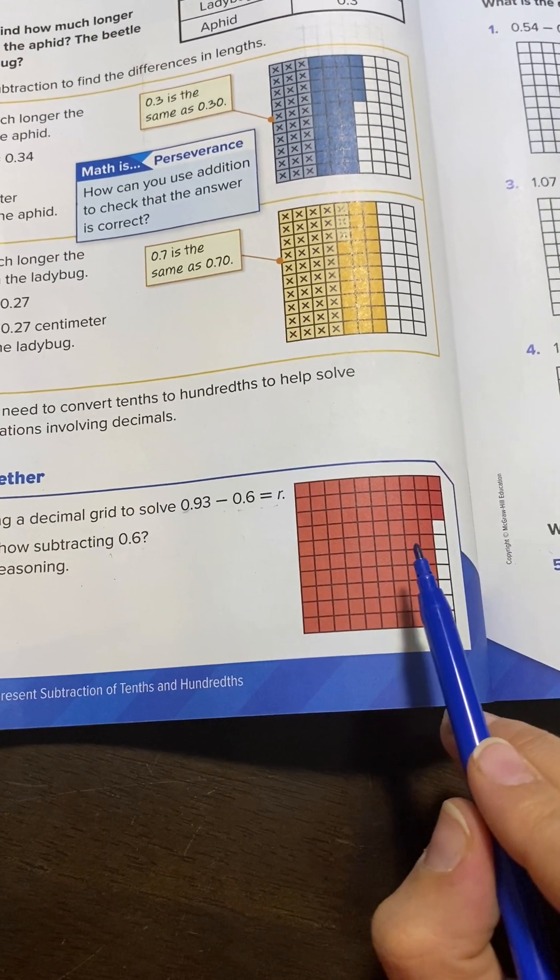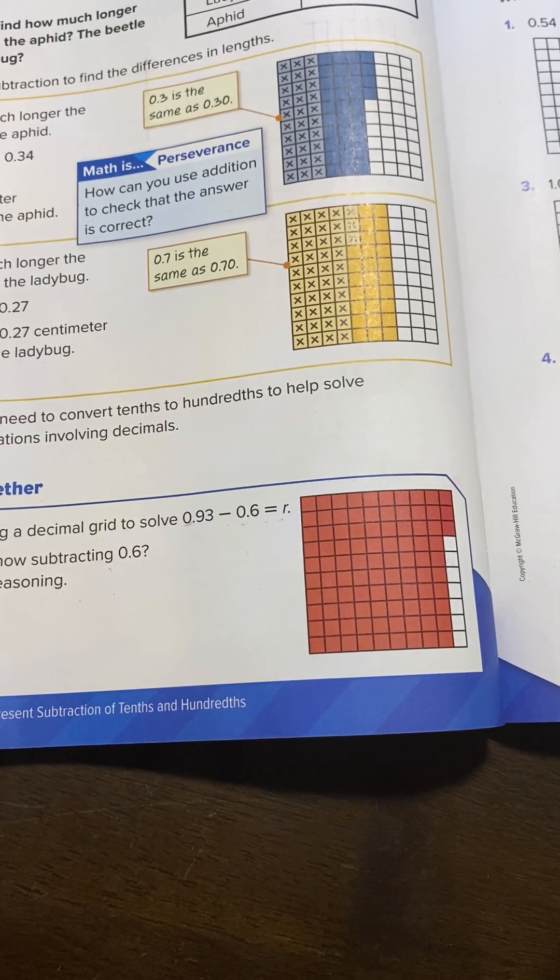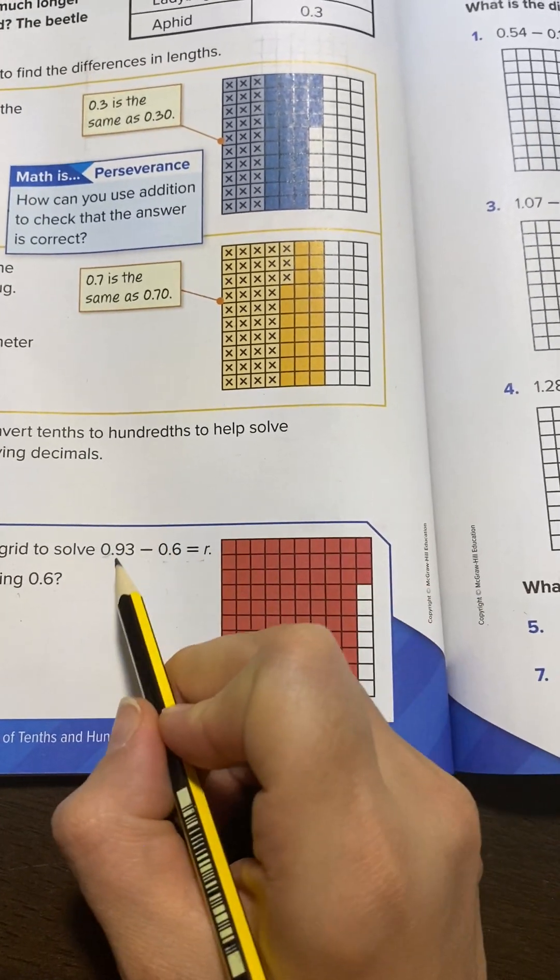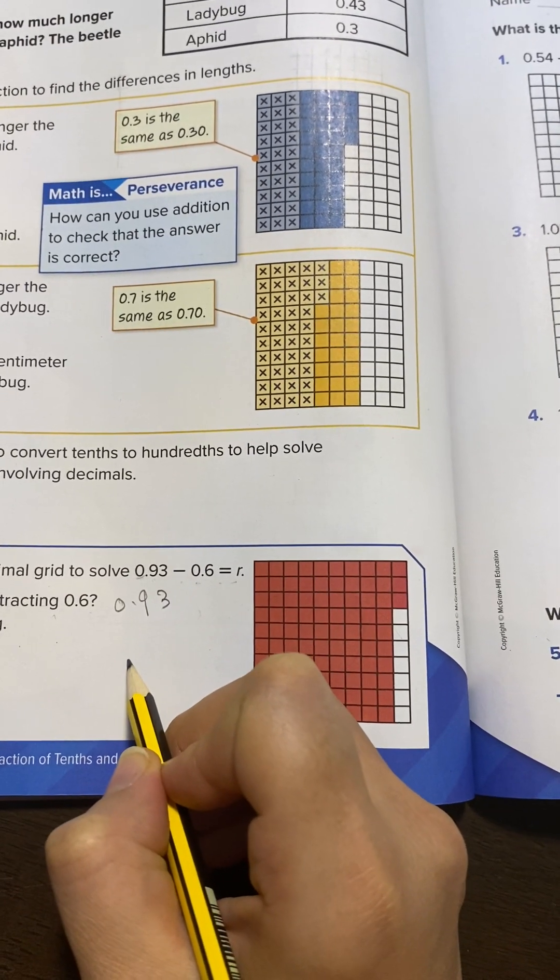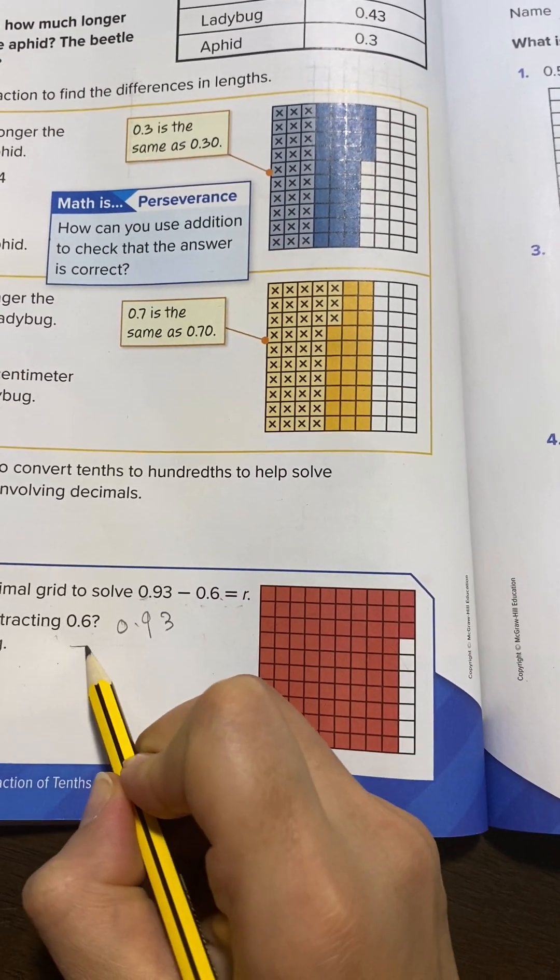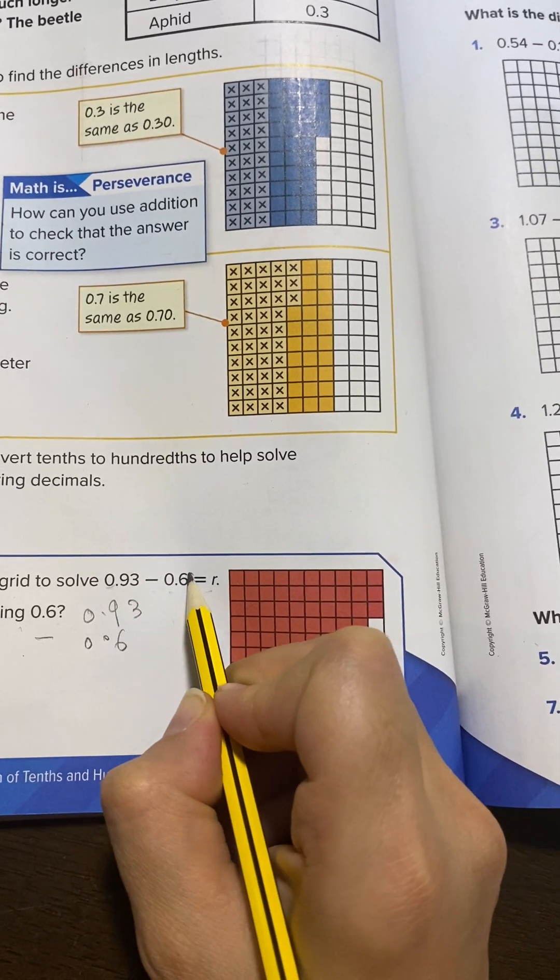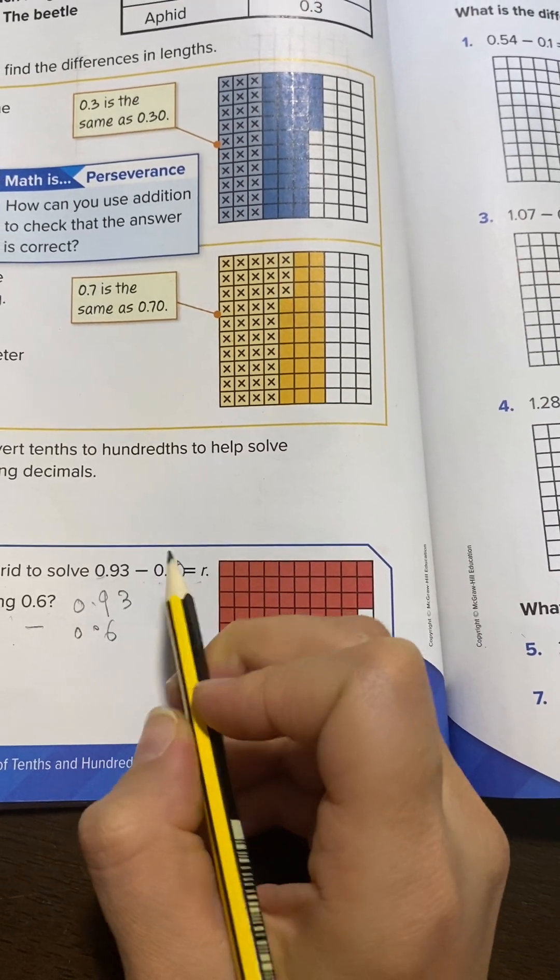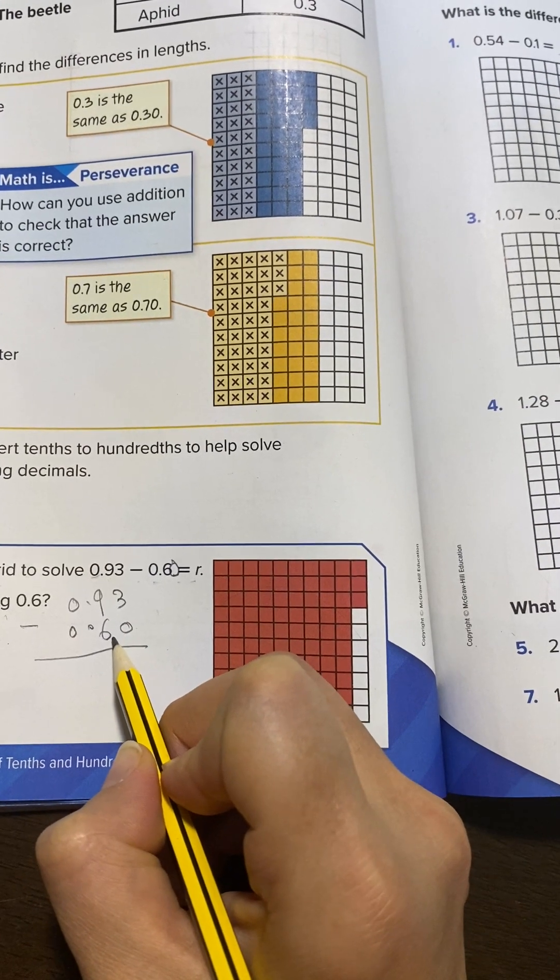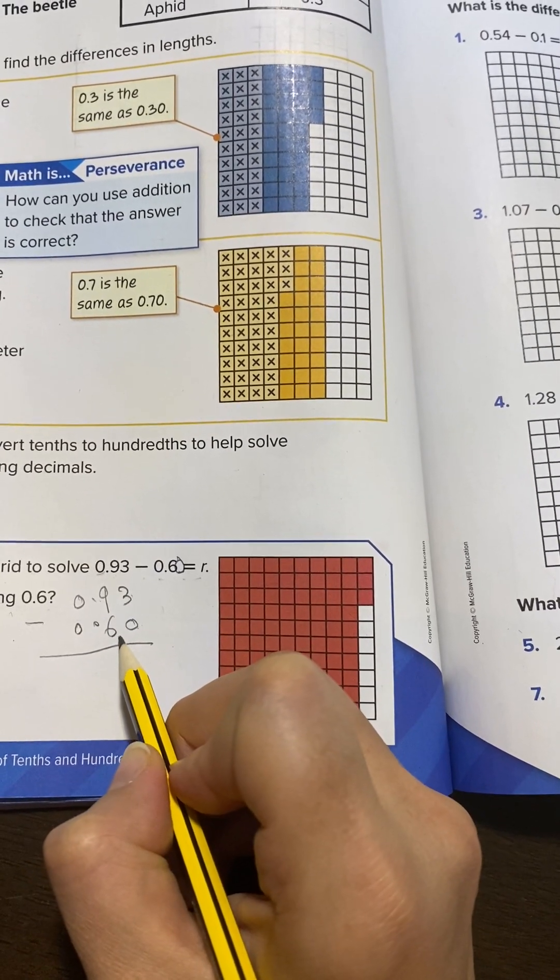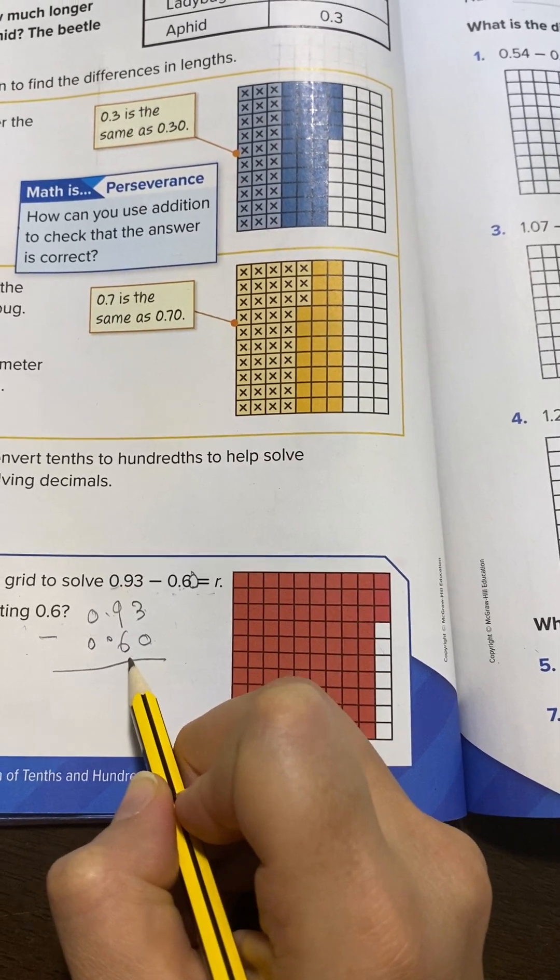He colored 93 squares. Minus 6 - be careful, 93 is two digits, but 6 is one digit. Minus 0.6 - so how do you make this two digits? You add 0. As you see here, we add 0. Now two digits with two digits. So you will erase 6, or 60. We will erase 60 squares.